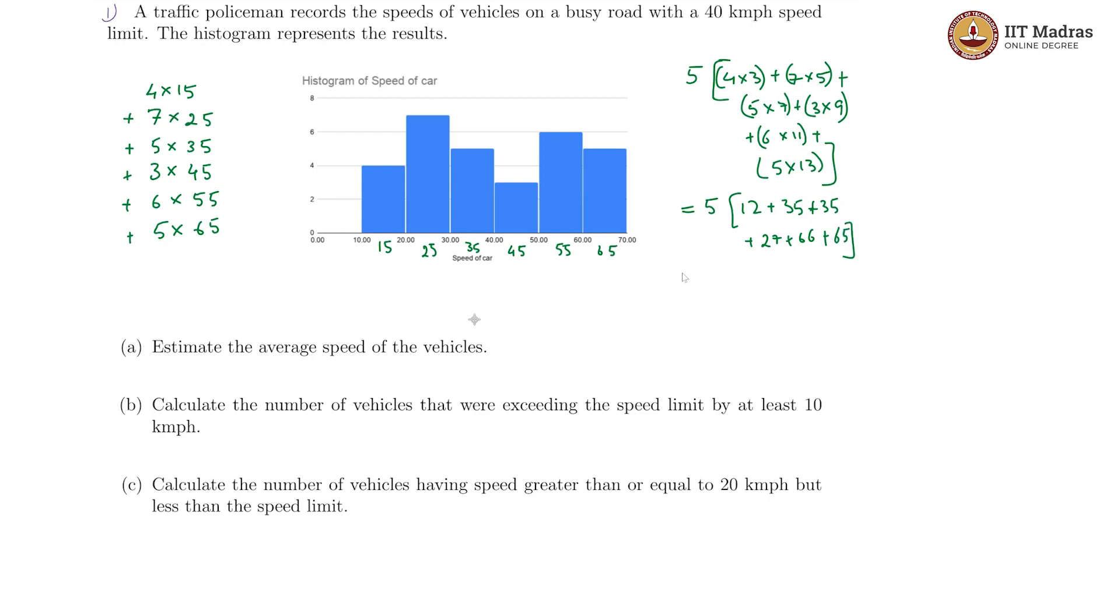Let us sum these up. We will get this is equal to 5, this is equal to 5 times 35 plus 35 is 70, 70 plus 12 is 82, 82 plus 27 is 109, 109 plus 66 is 175 plus 65 is then 240 multiplied by 5 will give us 1200. This is equal to 1200.